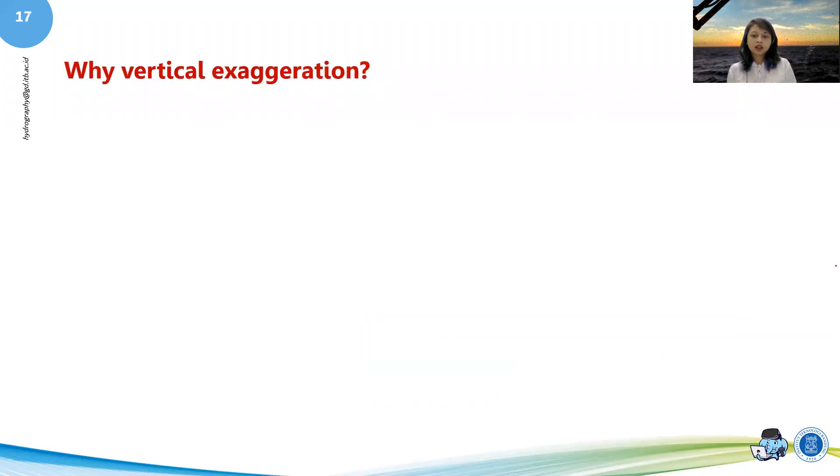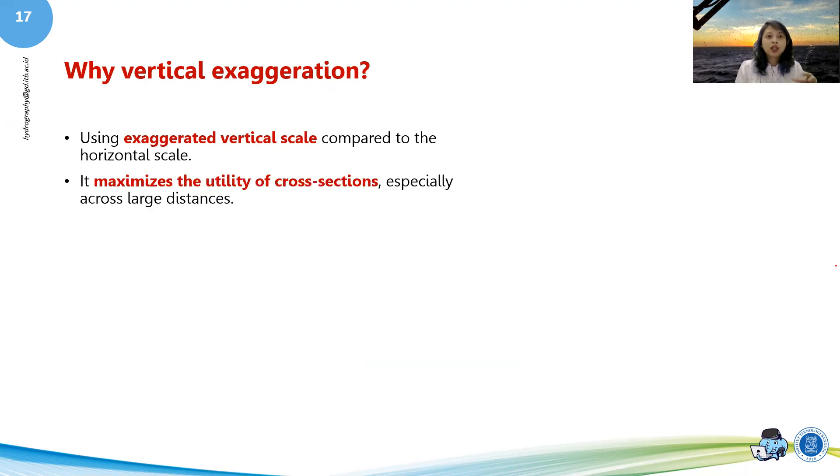So what is actually vertical exaggeration? Vertical exaggeration is basically when we're using an exaggerated vertical scale compared to the horizontal scale. We sometimes do this to maximize the utility of cross-sections, especially across large distances.